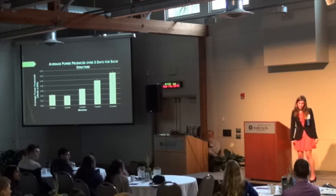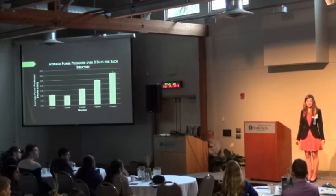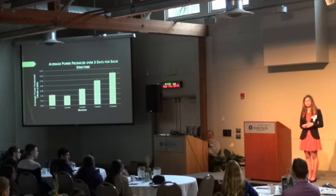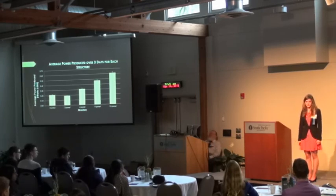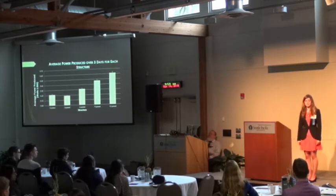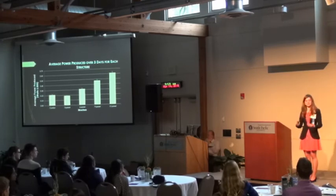You said there was no significant difference in the t-test between control and three. Did you run a t-test between the 12 and the control, or the 12 and the three? No — I just ran the ANOVA test on all of the structures altogether, and that did give me a statistical difference. Based on my standard error bars, I'm guessing if I did run the t-test there would be a significant difference, but I only ran the t-test between the control and the three because they looked so close.